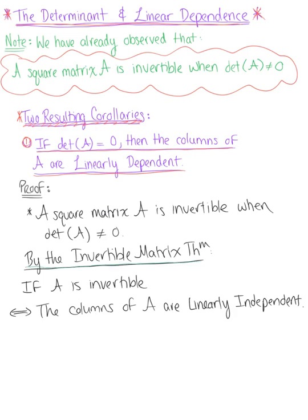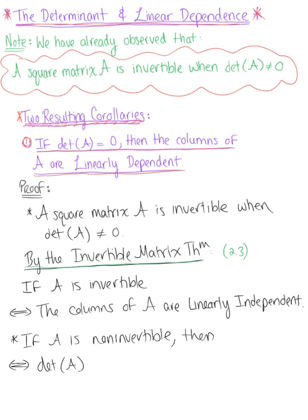Thinking back to the conditions of the invertible matrix theorem from section 2.3, we know that all 12 properties of the invertible matrix theorem are logically equivalent, meaning they're either all true or all false. From this, we can say that if matrix A is not invertible, then this implies that the determinant of A is equal to 0, and so the columns of matrix A are linearly dependent.